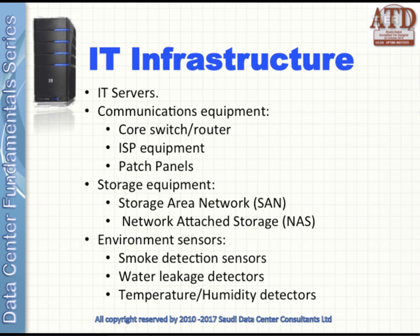IT servers, of course. Second, communication equipment such as core switches or routers, ISP equipment to link your data center to the outside world, and patch panels to connect IT equipment together. Storage equipment includes SAN, which presents a shared pool of storage devices to multiple servers, and NAS, which is specialized for serving files by hardware, software, or configuration. Finally, environmental sensors — essentially smoke and water detection sensors, as well as temperature and humidity ones.